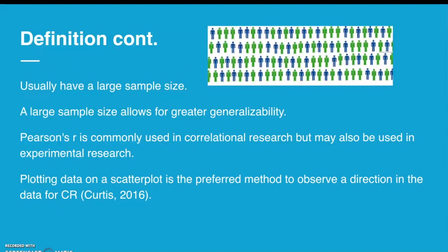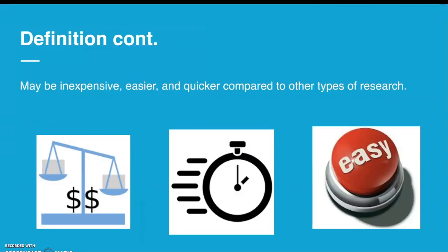Some more characteristics of correlational research: there's usually a large sample size to allow for greater generalizability. Pearson's R is usually used to measure correlations, and scatterplots are often used to find a direction or trend for the data. Advantages of correlational research include that it's inexpensive, easier, and quicker compared to other types of research.